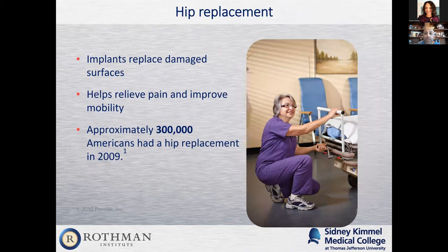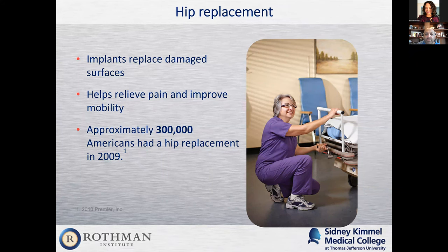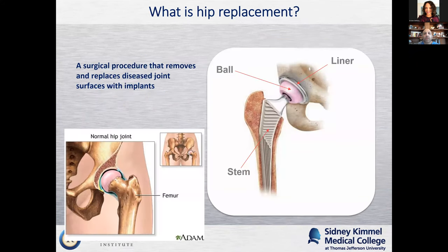Hip replacement is a good procedure when you've kind of exhausted the non-operative treatment methods. Basically what it does is it replaces the damaged surfaces. It helps to relieve pain and improve mobility. Pretty common — in 2009, about 300,000 were done in this country. Probably now we're up to four or five hundred thousand a year. At the Rothman Institute, we do about eight or nine thousand a year.